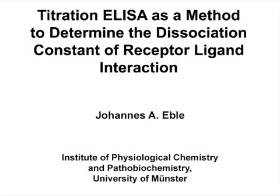The overall goal of this titration ELISA is to determine the affinity constant of two binding partners in a reproducible and efficient manner using a novel algorithm. This method can help answer key questions not only in the field of protein-ligand interaction and receptor research, but also in applied life sciences such as pharmaceutical research and pharmacology.